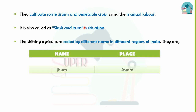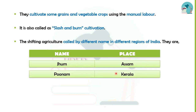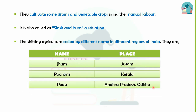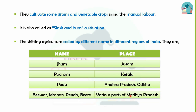Shifting cultivation is known by different names in India — such as Jhum, Poonam, Marthaan, Penda, Beers, and Bira in various parts of the country.